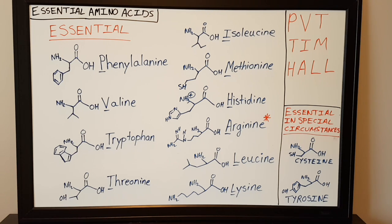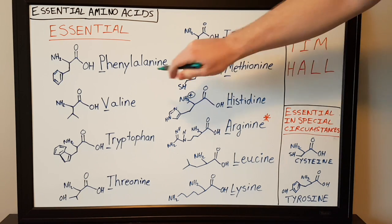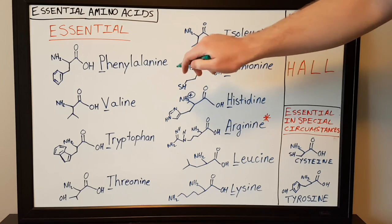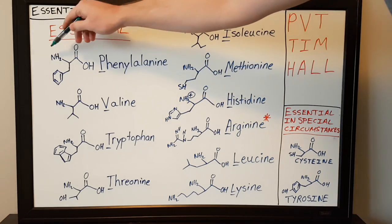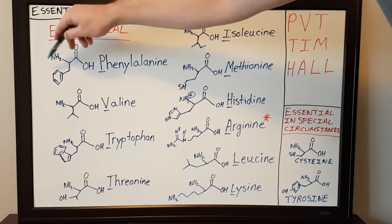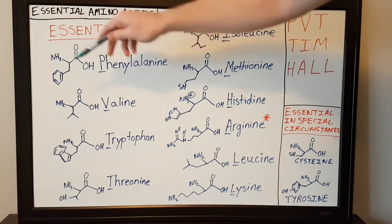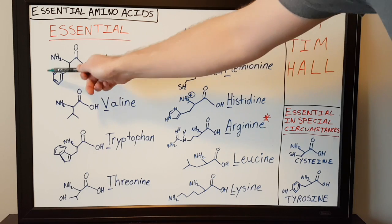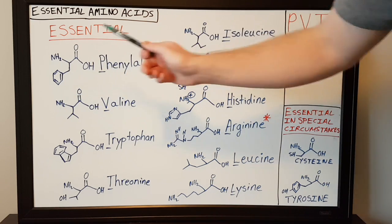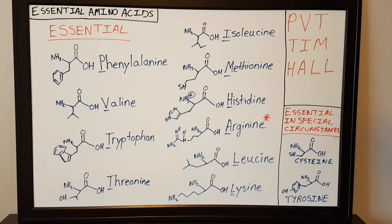The first essential amino acid is phenylalanine. As the name suggests, there is an alanine backbone with a phenyl group or a benzene ring attached to it.